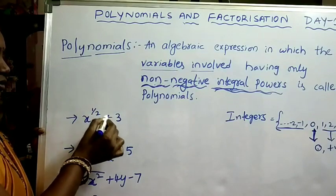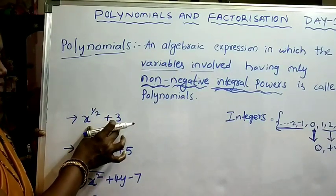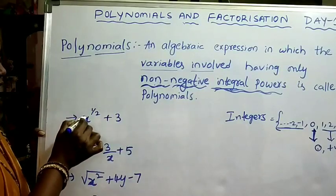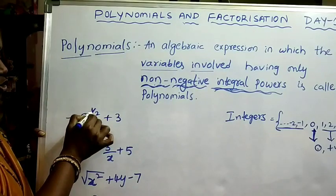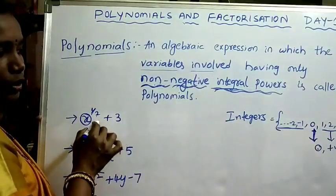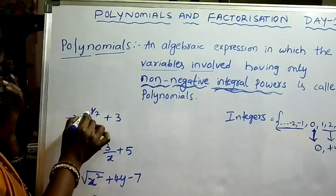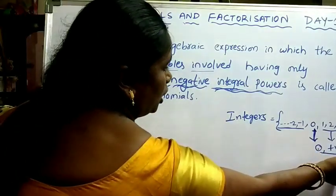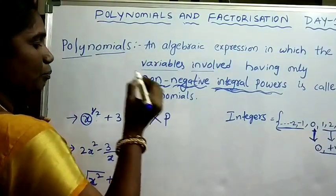Now consider x^(1/2) plus 3. It is an algebraic expression because it has a variable and a constant. But what is the power of the variable here? 1/2. Is 1/2 an integer? No, it is not an integer. Therefore x does not have a power that is 0 or a positive integer. Therefore it is not a polynomial.